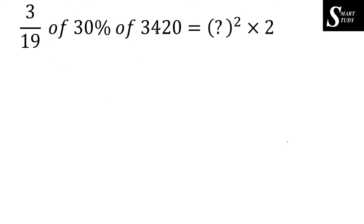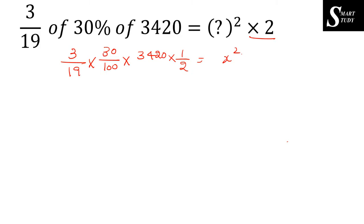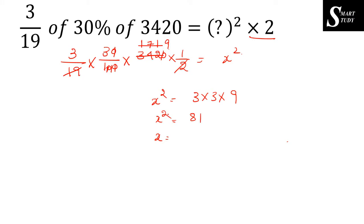The ninth question: 3 divided by 19 of 30% of 3420, equals question mark squared into 2. This is 3 over 19, into 30 over 100, into 3420, into 1/2 equals x squared. Cancelling zeros and by 2 and by 19: we are left with x squared equals 3 into 3 into 3 into 9. Since 3 into 3 is 9 and 9 into 9 is 81, x squared equals 81, so x equals root of 81 equals 9.